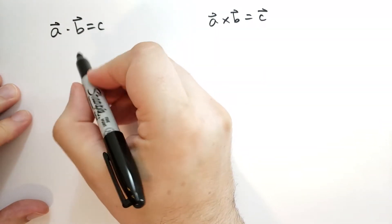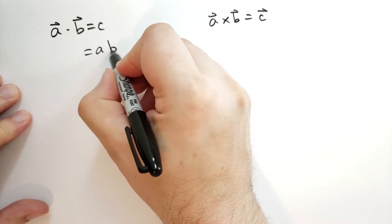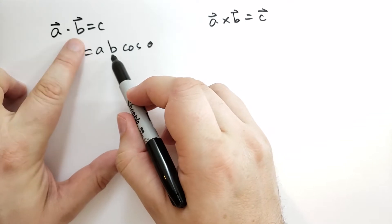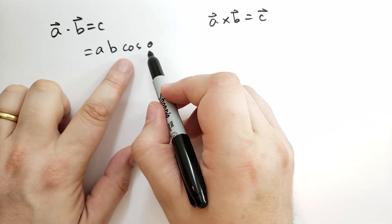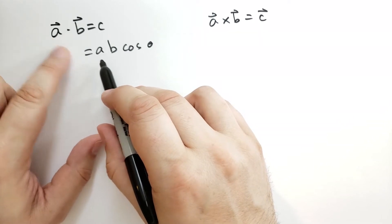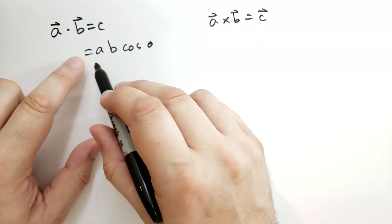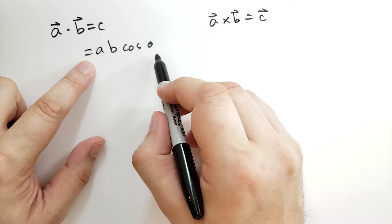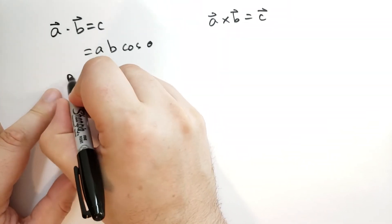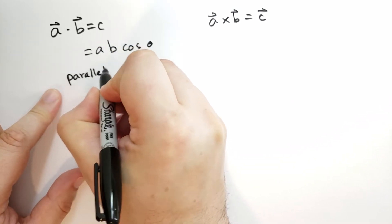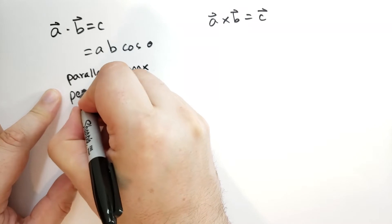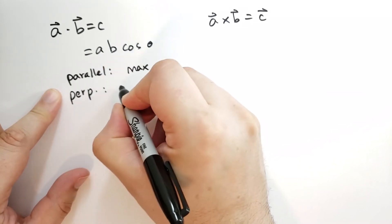The magnitude of the dot product is simply A times B times cosine theta, where A is the magnitude of the A vector, B is the magnitude of the B vector, and theta is the angle between the two vectors. When the two vectors are parallel, the dot product is maximized. However, when the two vectors are perpendicular, the dot product is 0.